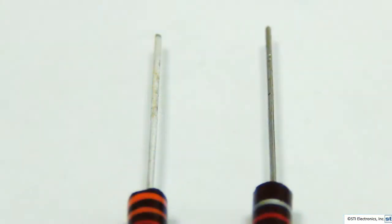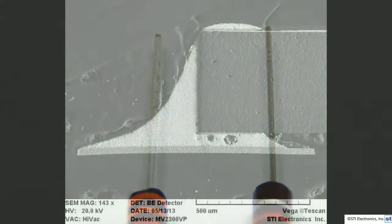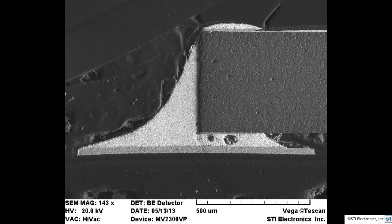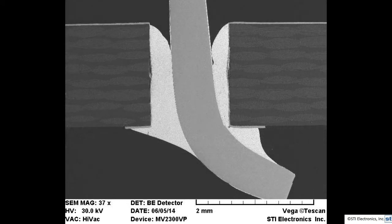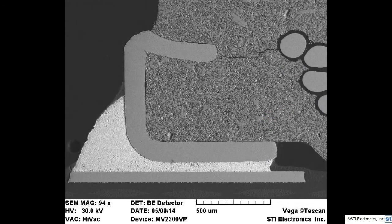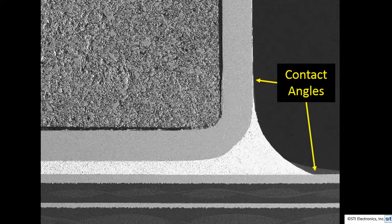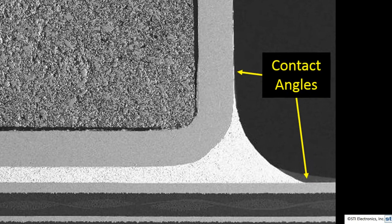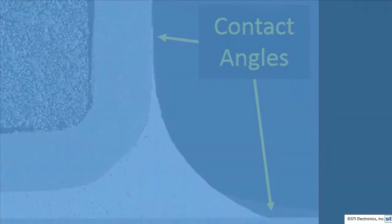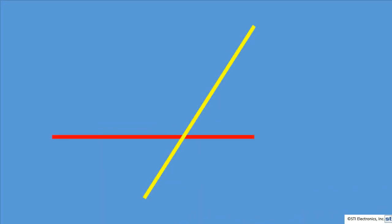Now that we've discussed solderability, let's move on to wetting. The J-Standard 001 states that the solder connection wetting angle shall not exceed 90 degrees. So what is this wetting angle? This is also known as a dihedral angle. Do not confuse the fillet shape with the contact angle — you can have a concave fillet with bad wetting and a convex fillet with good wetting. The contact angle is measured where the solder fillet shape makes contact with the other metal, usually copper. We will look at this as the intersection of two planes.